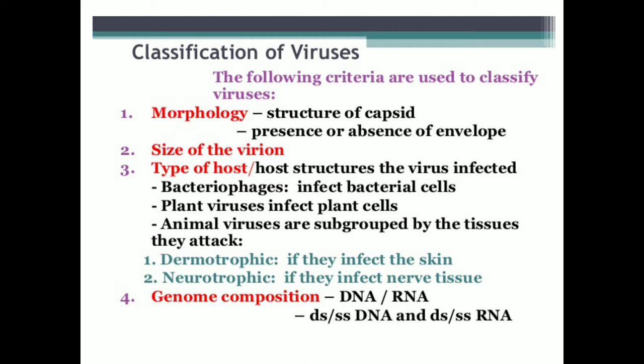The first criterion is morphology. On the basis of morphology — that is, on the basis of size and shape of the protein coat or capsid — we classify the different plant viruses. Classification based on morphology includes classifying the plant virus on the basis of the structure of the capsid. The outer protein coat of the virus is called the capsid. The presence or absence of the protein coat and the size of the protein coat are used to classify the virus.